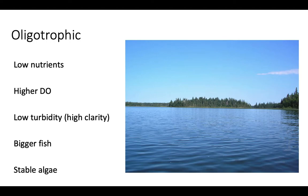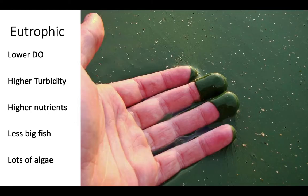An oligotrophic lake is the kind you want to swim in. A eutrophic lake, on the other hand, has low dissolved oxygen, high turbidity, sunlight cannot penetrate, plants are not able to photosynthesize, high nutrient content, totally hypoxic, fewer big fish, lots of algae, and unstable trophic webs. This is a very unhealthy ecosystem.